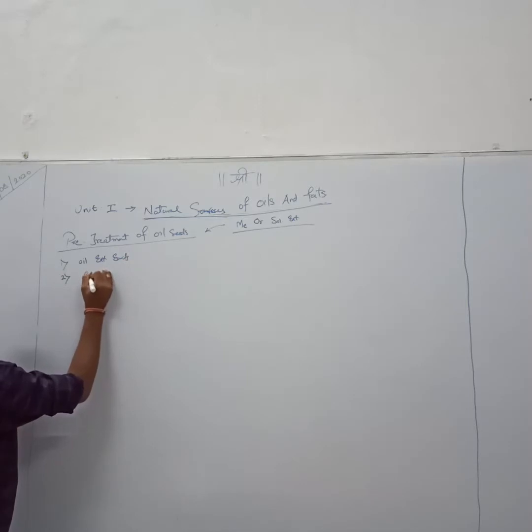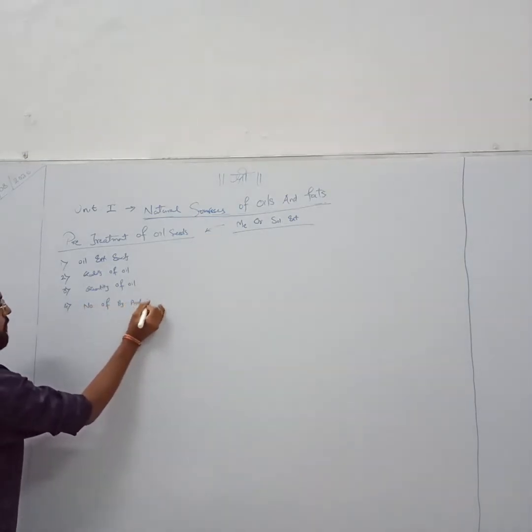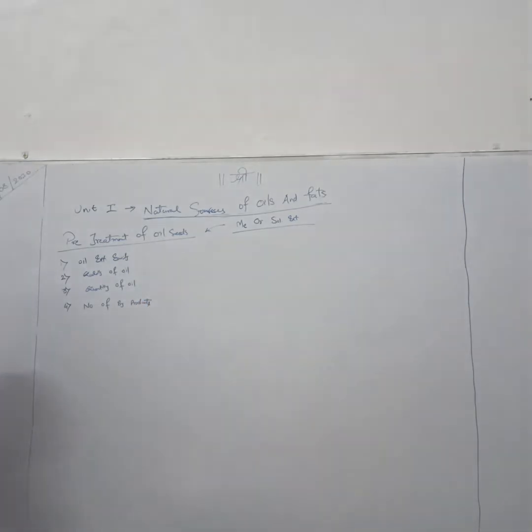Second one, quality of oil. Third one, quantity of oil. Fourth one, number of byproducts.